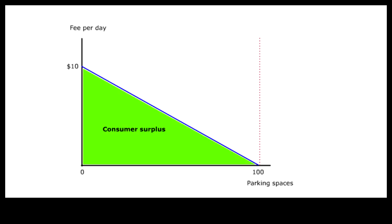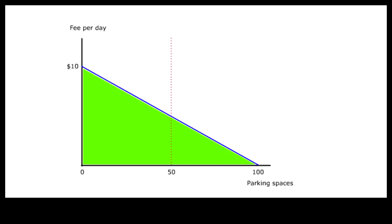When the number of parking spaces is fewer than the number of drivers needing parking, this consumer surplus is reduced by the uncertainty of not finding a space. Specifically, when the number of spaces is reduced by 50%, the utility of a space is also discounted by 50%. If parking is kept free of charge, the reduced green area thus represents the probabilistic consumer surplus.